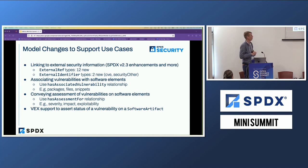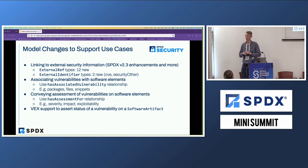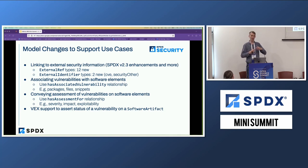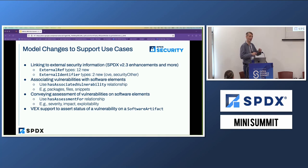We have assessments. The usual suspects include EPSS — which indicates the likelihood of a vulnerability being exploited — and also VEX. VEX is a way to communicate: yes, I have this open source component, yes we know there's a vulnerability, but actually we configured this component so you cannot exploit this vulnerability, because we configured it so it's behind our firewall.